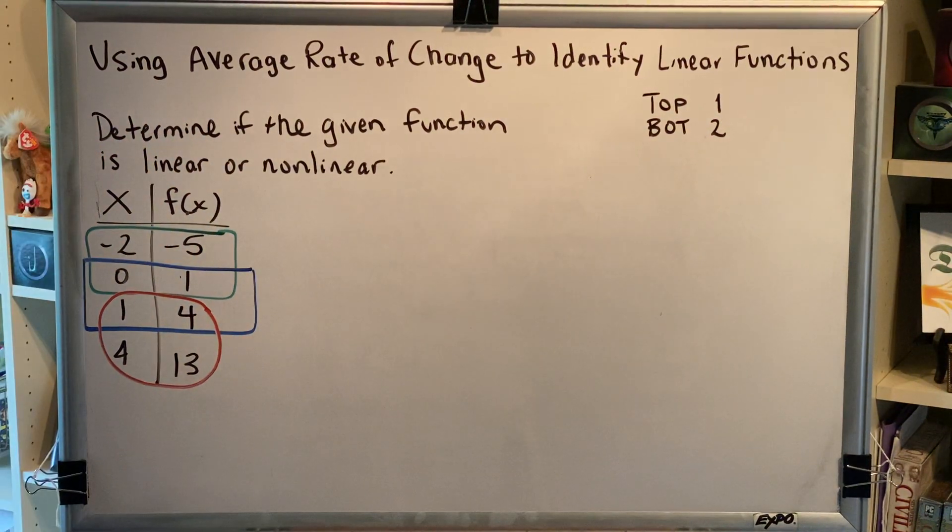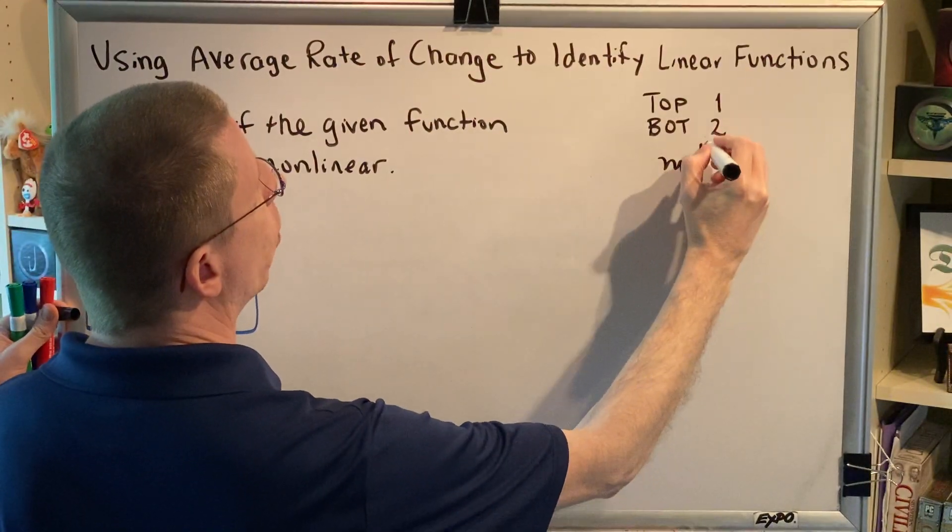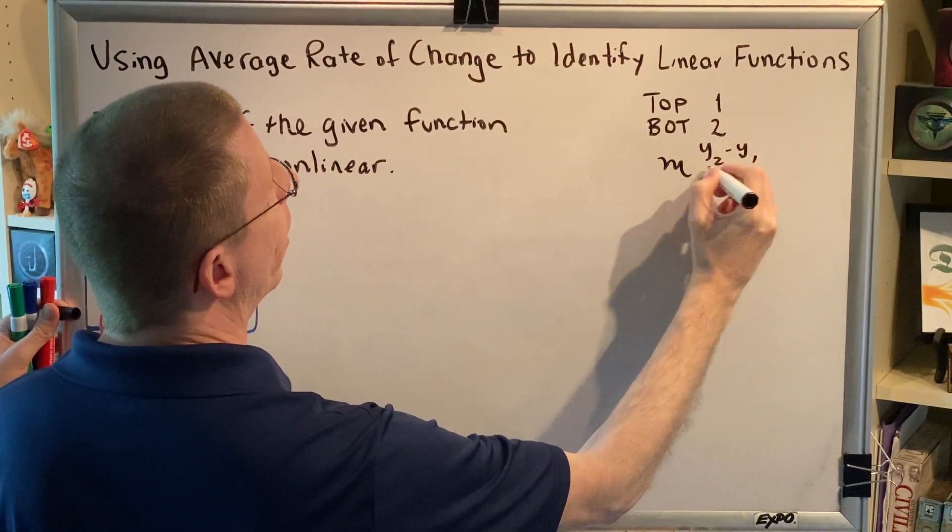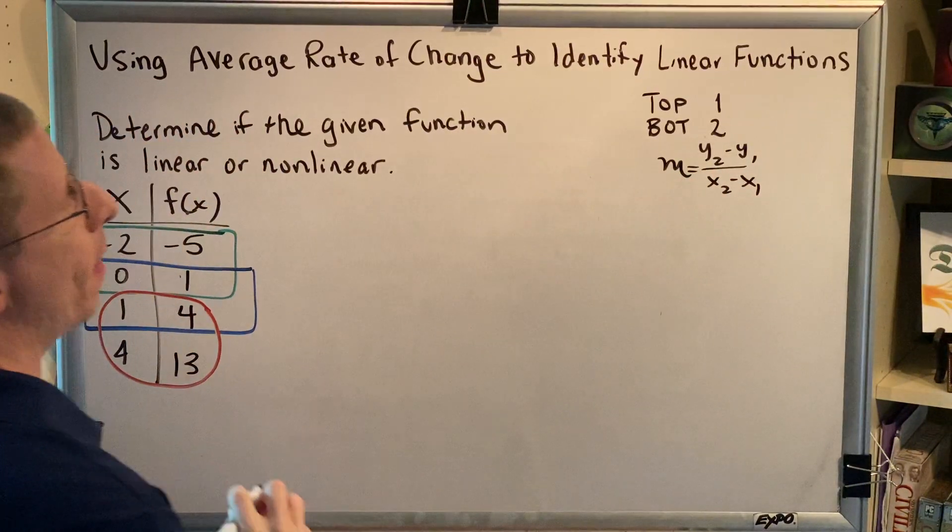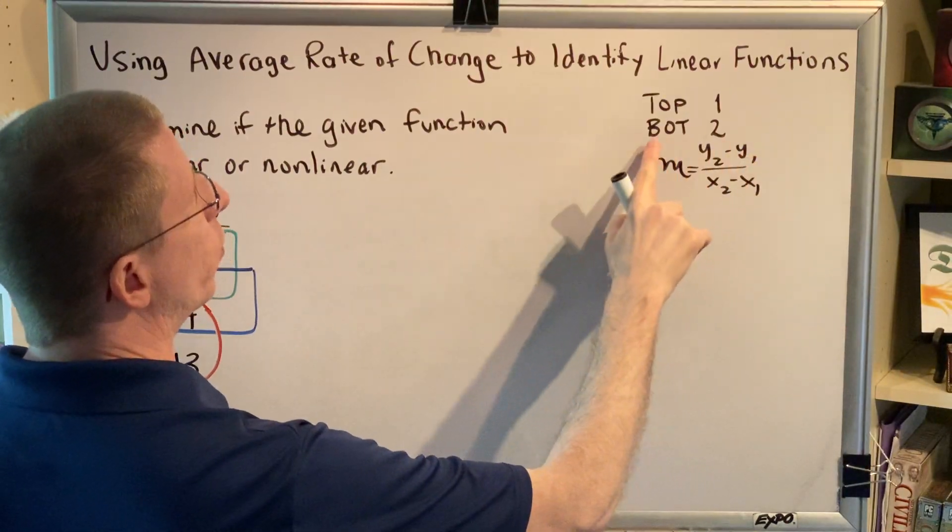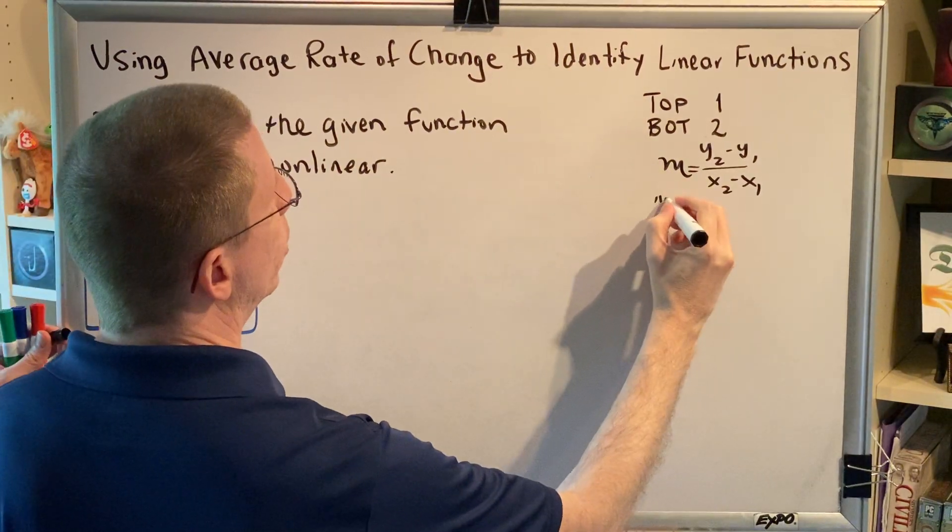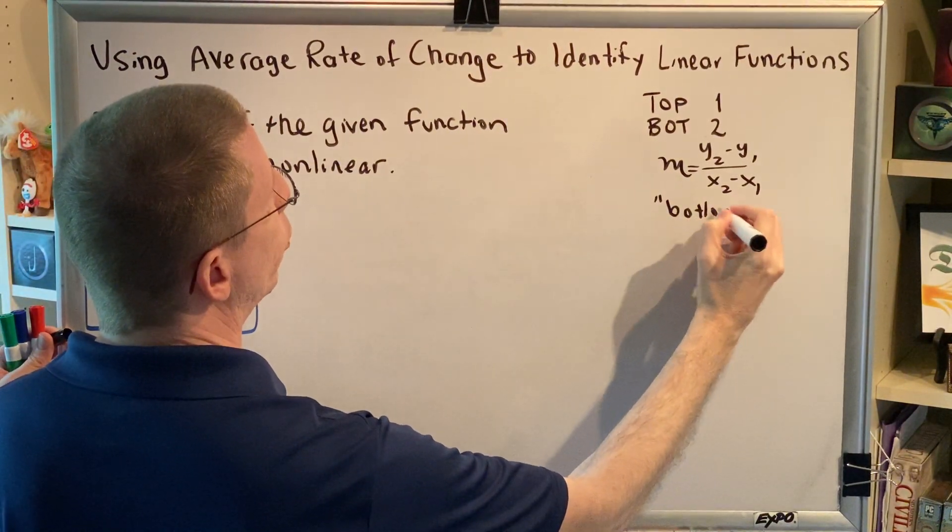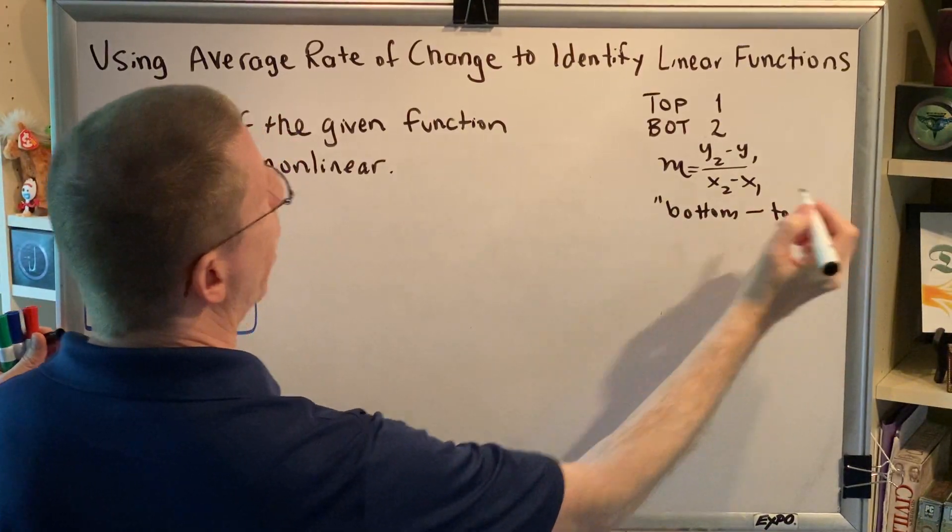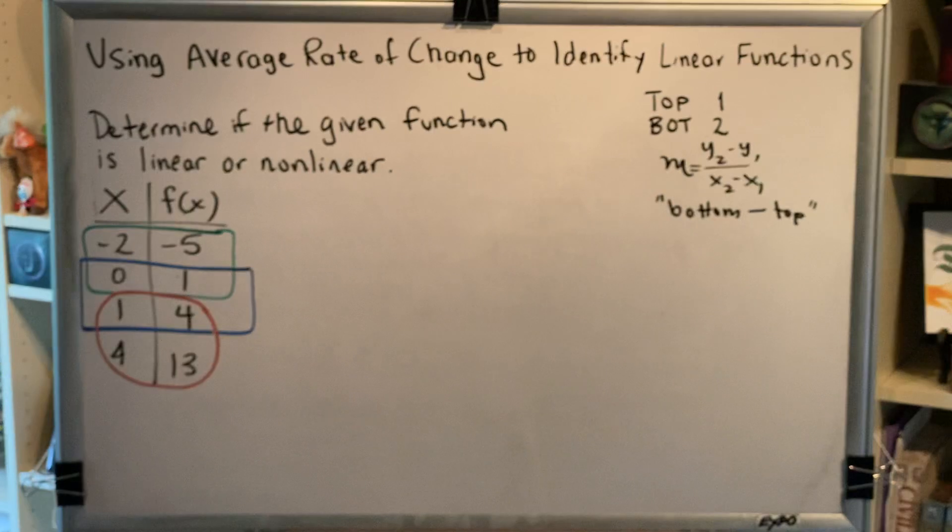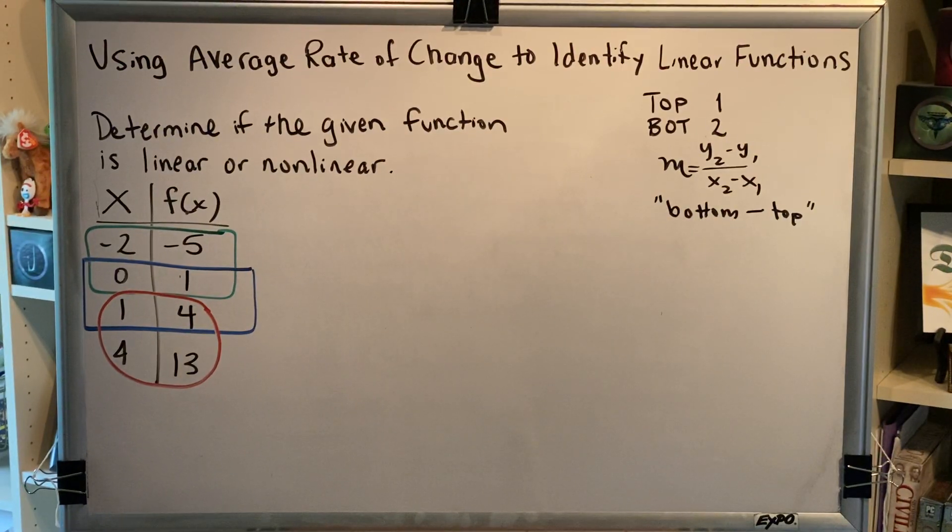Now if you remember your slope formula, m equals y2 minus y1 over x2 minus x1, that means that we're doing 2 minus 1, which is bottom minus top. So I'm just going to write here that we're going to do bottom minus top for all of our slope calculations, and that should make this very easy to do so that we don't make any mistakes.